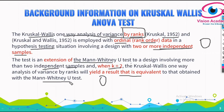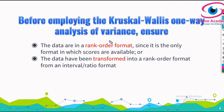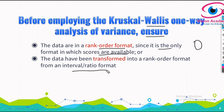When groups are more than two — k equals three, four, five, and so on — we consider this as ANOVA by ranks, making it a mixture of the Mann-Whitney U-test and ANOVA. Before employing the Kruskal-Wallis test, we must ensure that data are in rank-order format, since we only consider ordinal data. If your data is in interval or ratio format, it must be transformed into rank-order format.